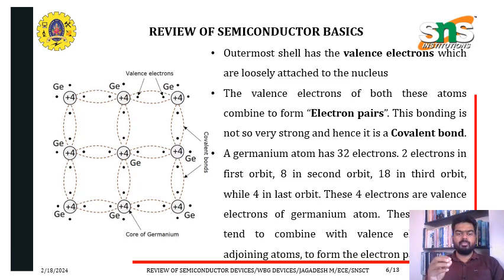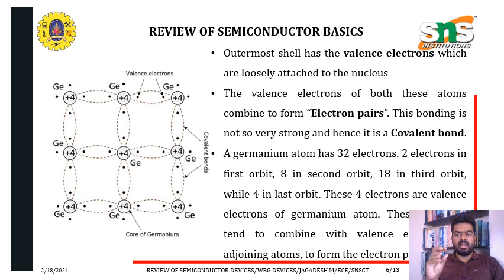Here we have an example using a germanium atom to explain how an intrinsic semiconductor looks. The outermost shell has valence electrons which are loosely attached to the nucleus. The valence electrons of adjacent atoms combine to form electron pairs, creating a covalent bond. The germanium atom has 32 electrons: two in the first orbit, eight in the second, eighteen in the third, and four in the outermost orbit — these four are the valence electrons.